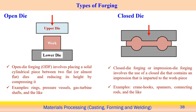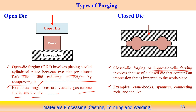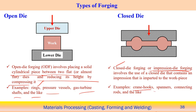Open die forging involves placing a solid cylindrical piece between two flat dies and reducing its height by compression; the material can deform laterally. Rings, pressure vessels, and gas turbine shafts can be produced this way. Closed die forging, also known as impression die forging, deforms material between closed dies to take the shape of the die cavity — enabling more complex components like crane hooks, spanners, and connecting rods.